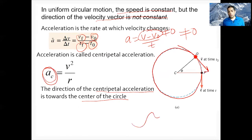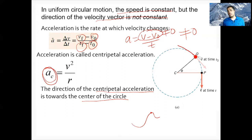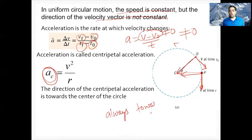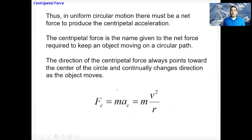The velocity at any point is directed tangent to the circle at that point. A tangent is a line that touches the curve at exactly one point. The velocity points along the tangent, and the centripetal acceleration points towards the center. So velocity and acceleration are always perpendicular — acceleration always points toward the center.